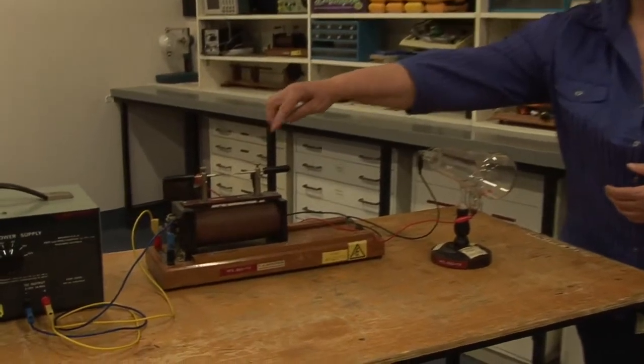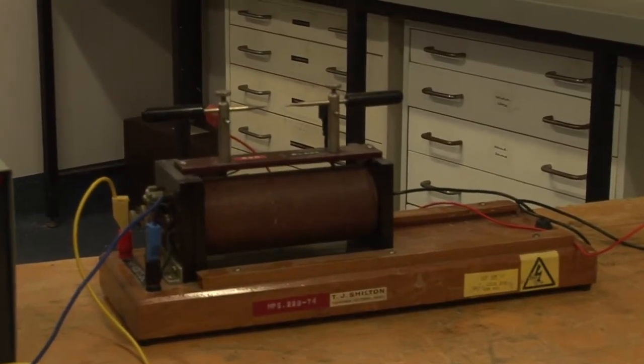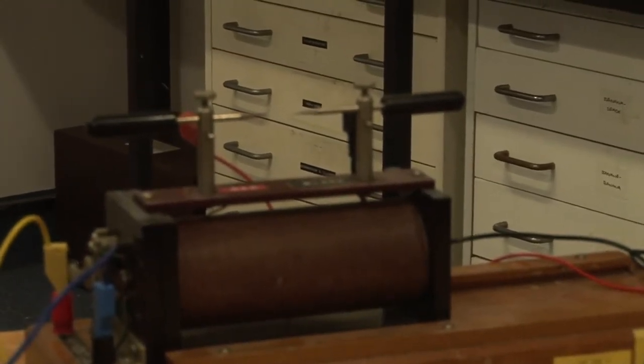The spark gap on the top is just that if the voltage gets too high, then the electrons will jump across. And every now and again, you may hear the spark jumping.